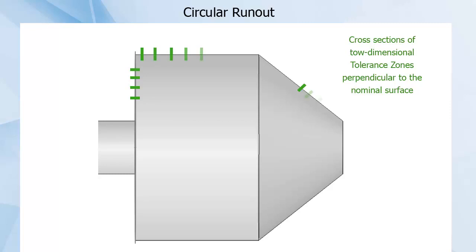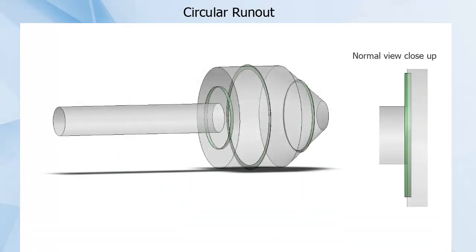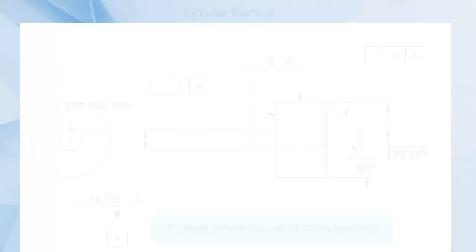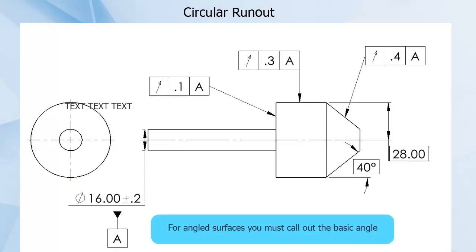Then, as many cross-sections as practical would be tested for their own two-dimensional TZ. Note that the orientation of the TZ changes with each surface, but the TZ is still a two-dimensional circular band. However, due to orientation and the part's rotation, the perpendicular use of circular runout controls flatness instead of circularity in a way. Also note that for angled surfaces, you must call out the basic angle so the gauge pin can be oriented perpendicular to the nominal surface.